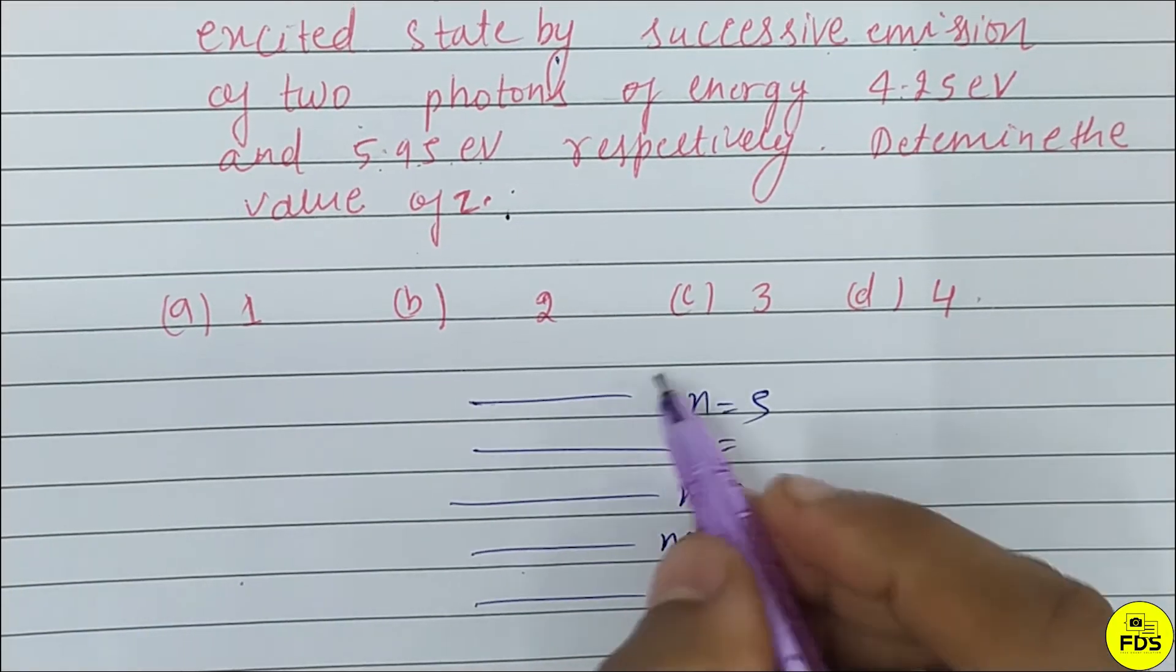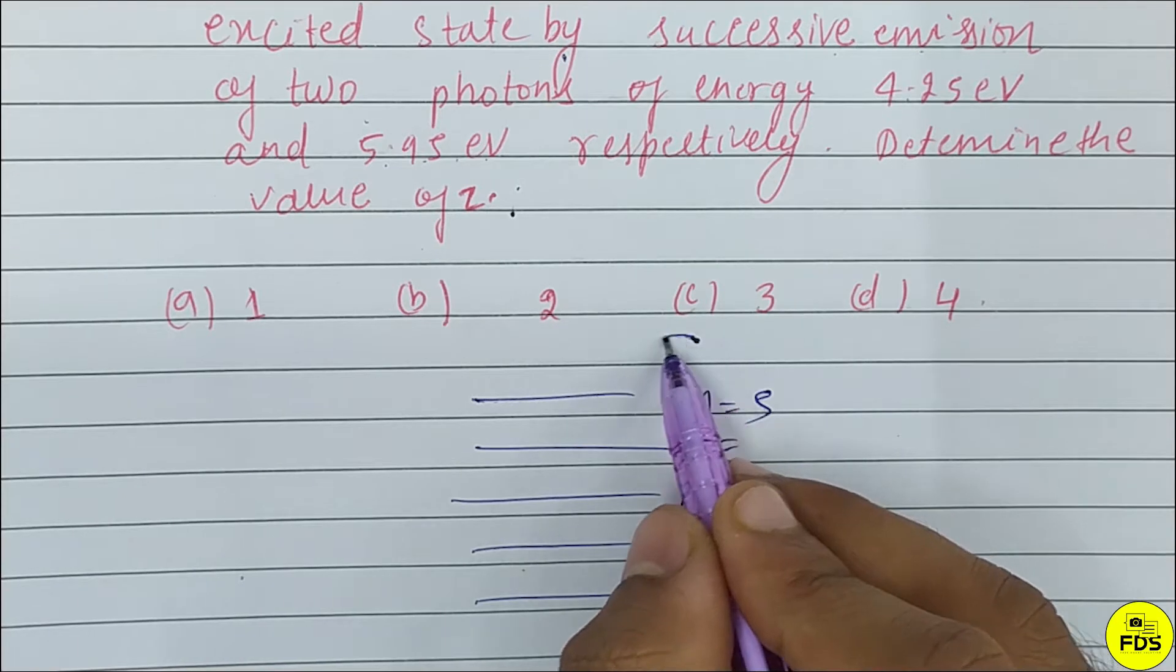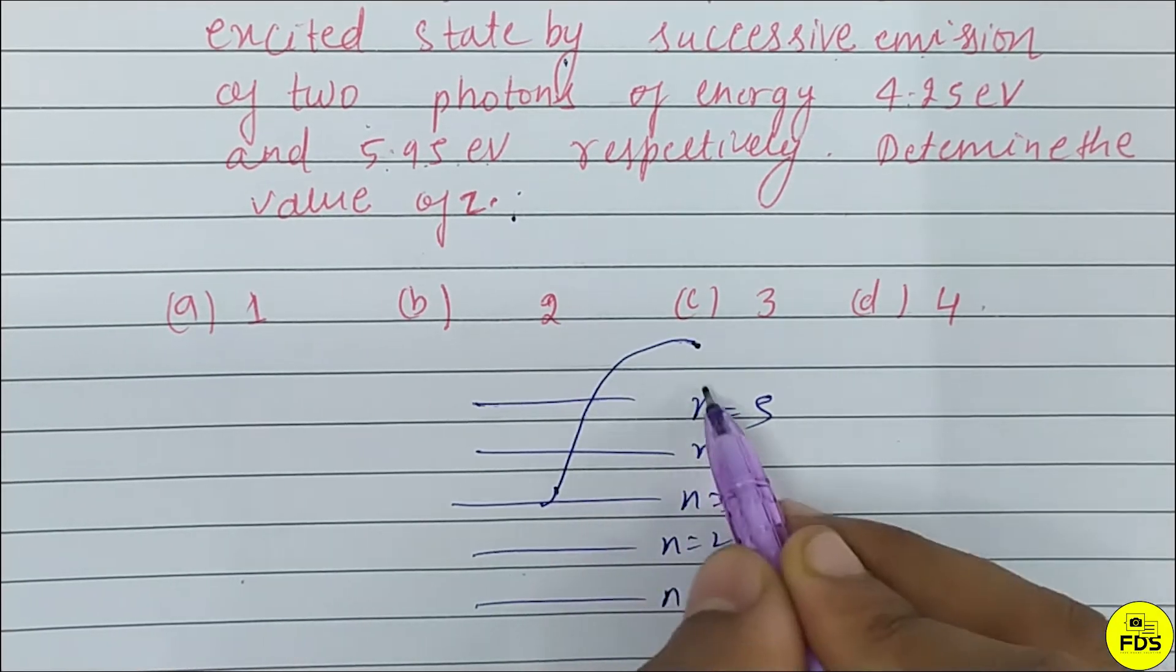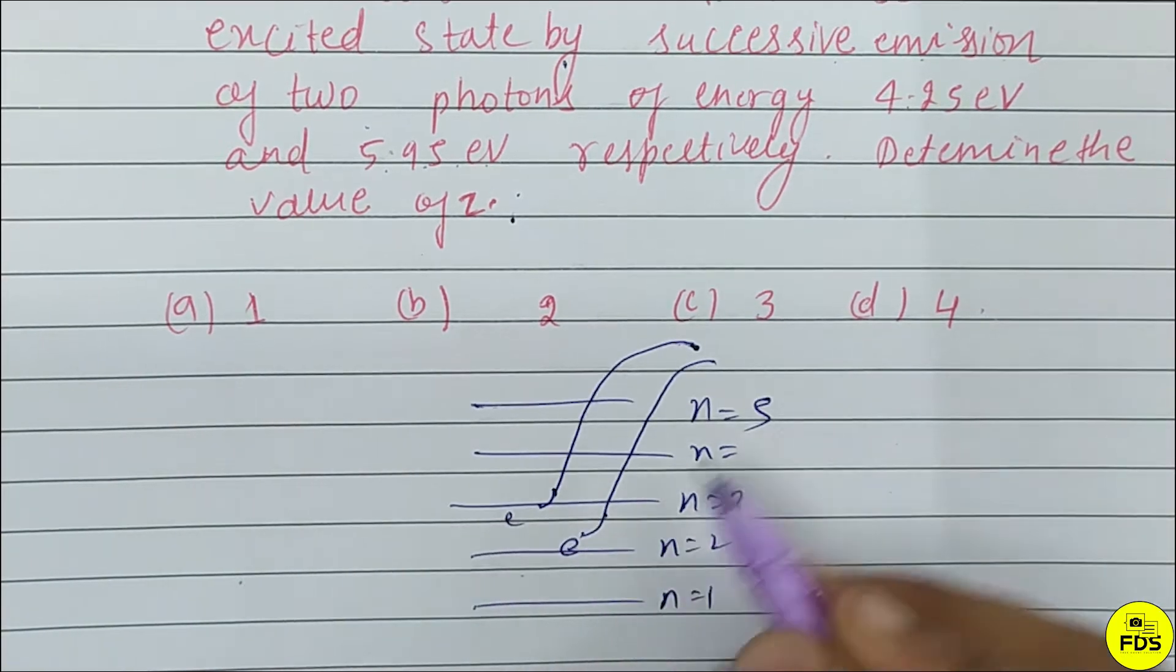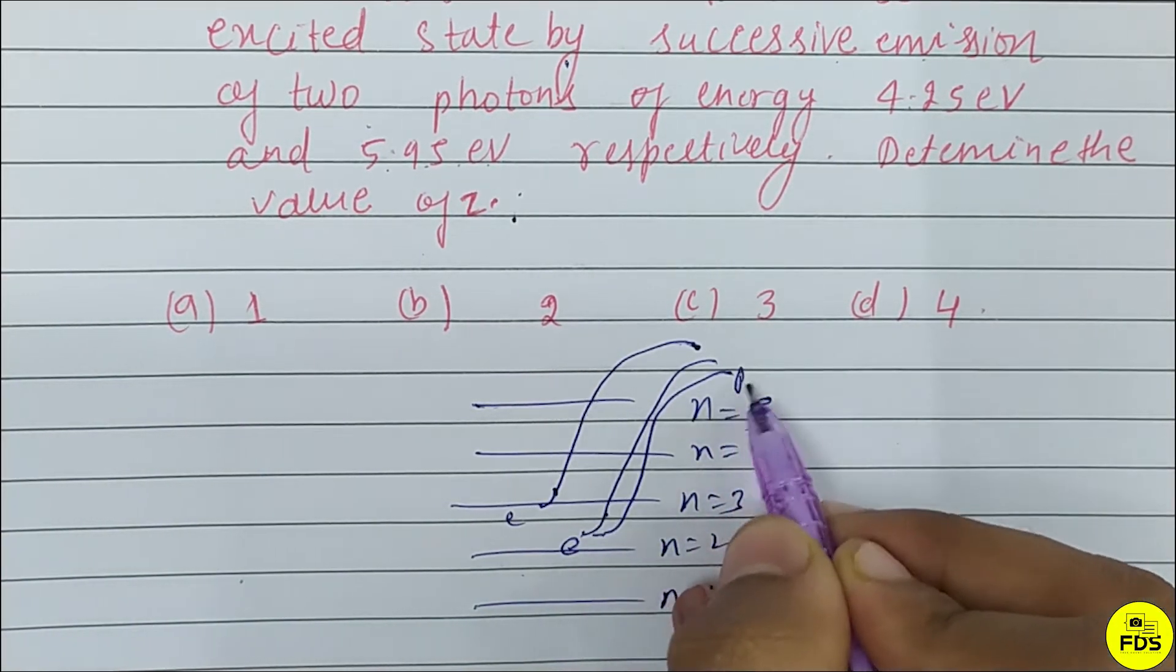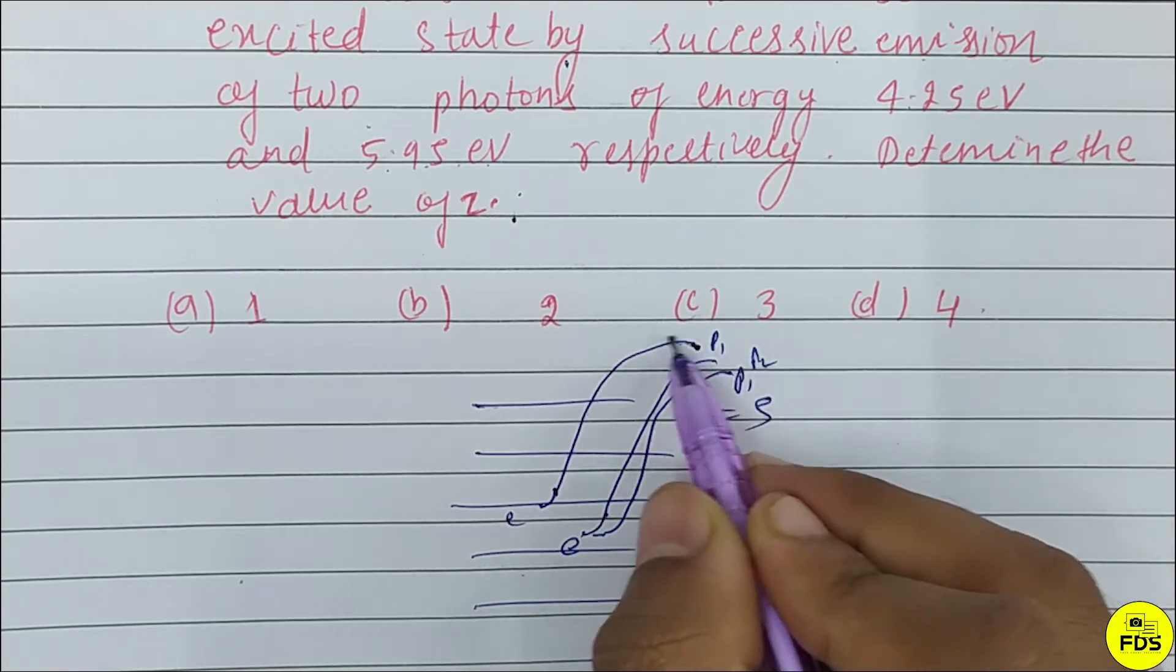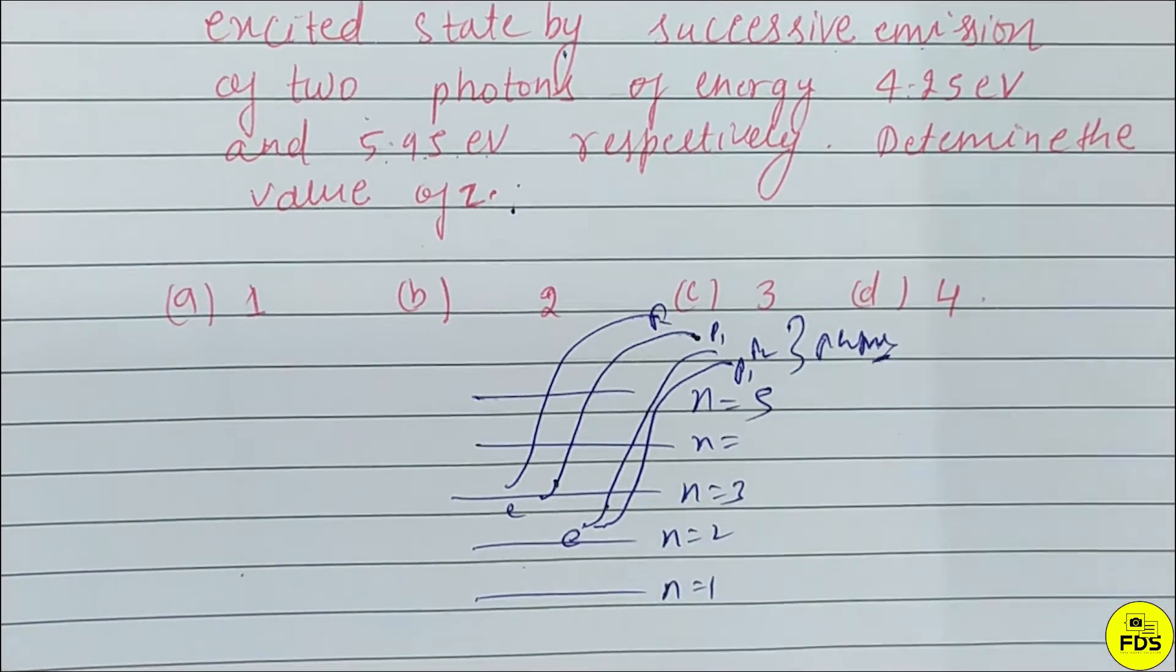We have energy levels 1, 2, 3, 4, and 5. There are photons being emitted - one photon here, another photon there. Two photons are being emitted in each case.